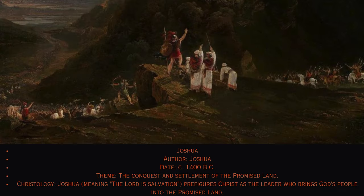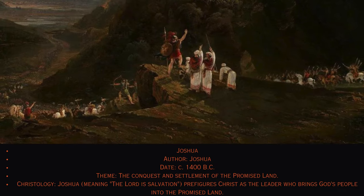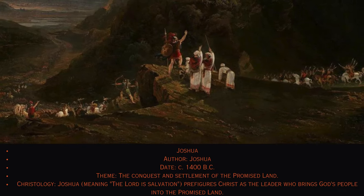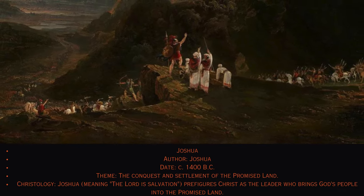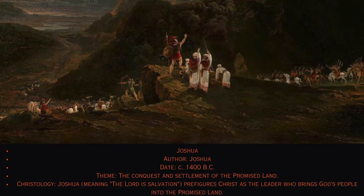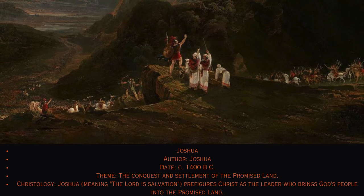6. Joshua. Author: Joshua, circa 1400 B.C. Theme: The conquest and settlement of the promised land. Christology: Joshua, meaning 'The Lord is salvation,' prefigures Christ as the leader who brings God's people into the promised land.